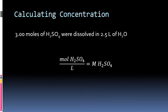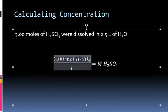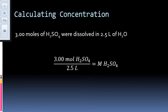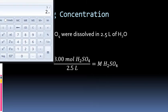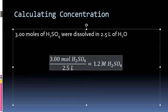Another example: three moles of sulfuric acid being dissolved in two and a half liters of water. Very straightforward. We take three moles of our sulfuric acid and divide it by our liter volume of water — our solvent — which in this case is 2.5 liters. Three divided by 2.5 equals 1.2 molarity. So our answer is going to be 1.2 M sulfuric acid.